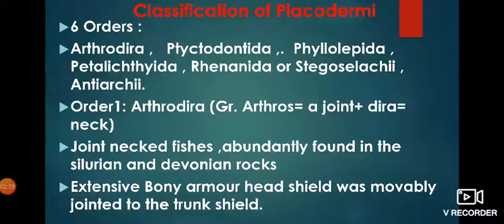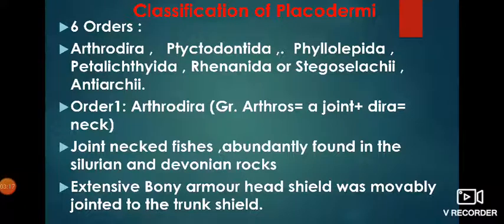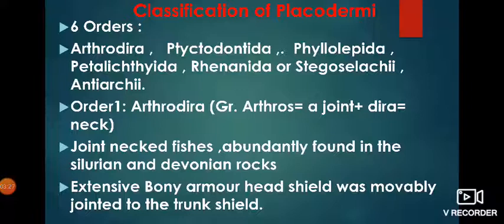Now we start today's class: Classification of Placoderms. There are six orders. Order one is called Arthrodira, with examples Coccosteus and Dinichthys.